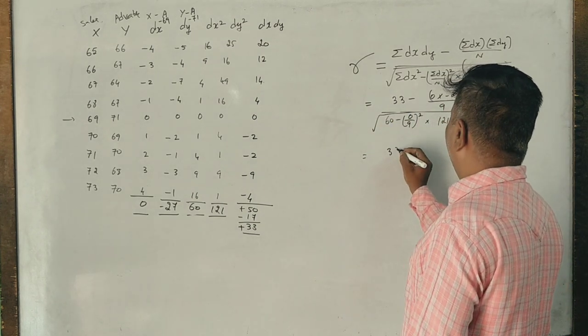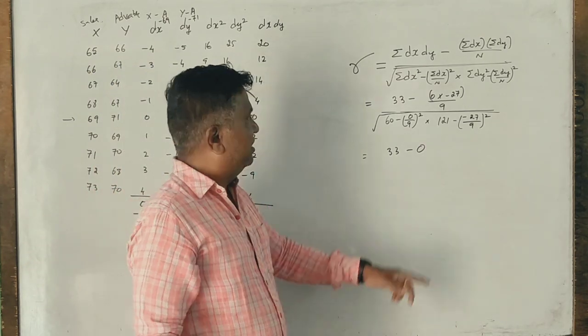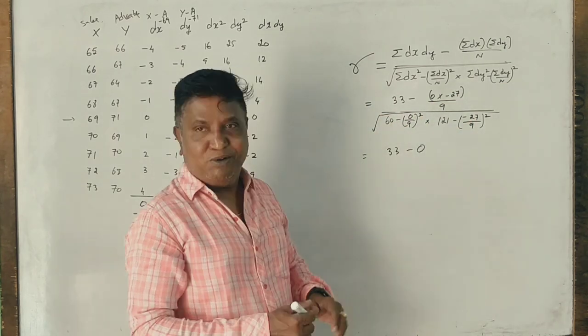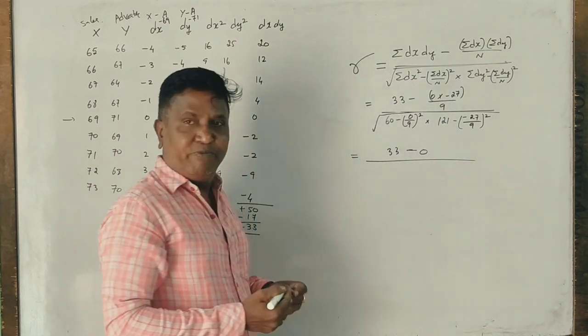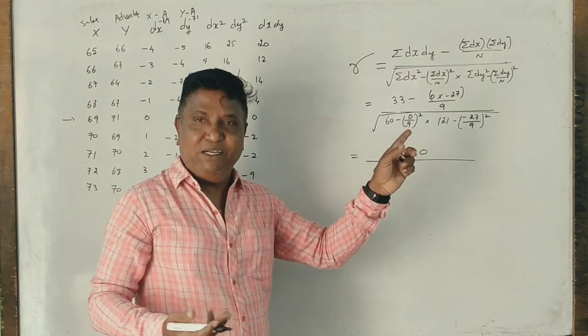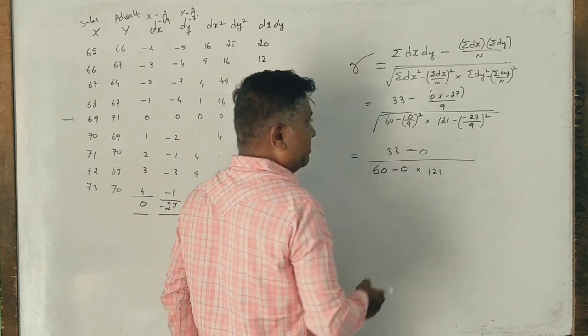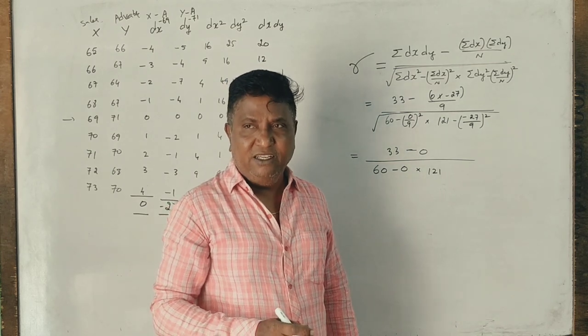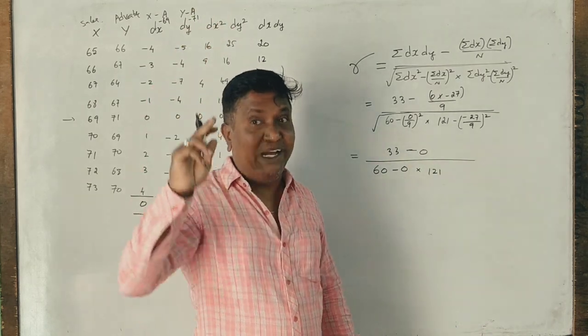Now 33 minus 0, anything multiplied by 0 is 0, anything divided by 0 is 0. Here 60 is the answer. 0 is the answer. 121 is the answer. Minus 27 divided by 9, 3. Minus 3, minus 3 square, plus 9. Minus into minus plus 9.